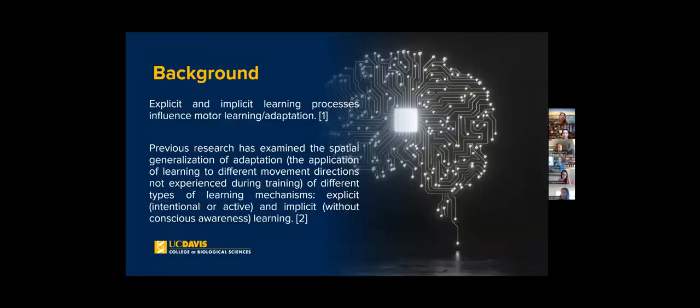What we are doing in our lab is we're examining explicit and implicit learning processes and how they influence motor learning and adaptation. Previous research has examined the spatial generalization of adaptation, which is the application of learning to different movement directions not experienced during training.